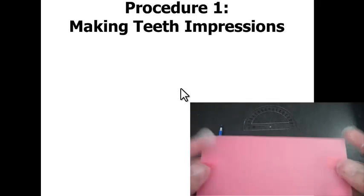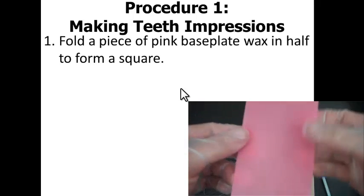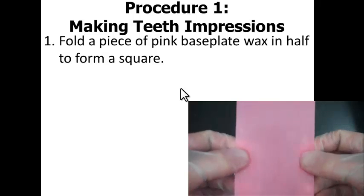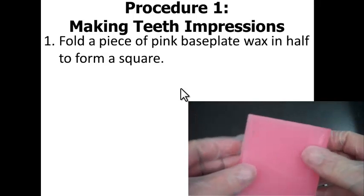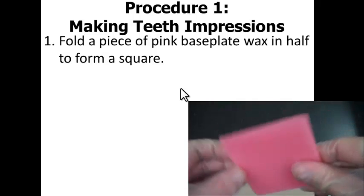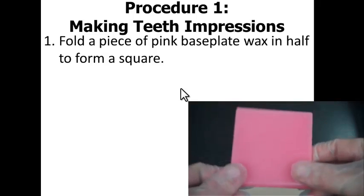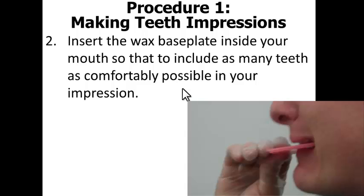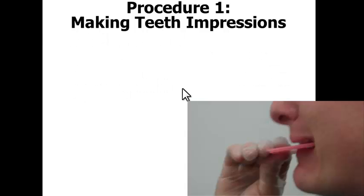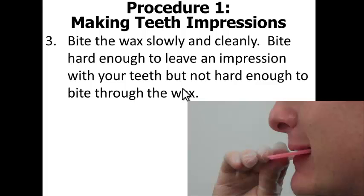I want you to locate your pink wax baseplate, and when you do so, you'll notice that it's a rectangle, and I'd like you to go ahead and fold it in half to form a square. Secondly, insert the wax baseplate inside your mouth to include as many teeth as comfortably possible in your impression. Third, bite down on the wax slowly and cleanly. I want you to bite hard enough to leave an impression with your teeth, but not hard enough to bite through the wax entirely.